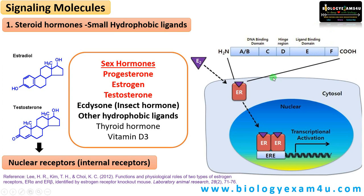The receptor has a DNA binding domain and a ligand binding domain. These steroid hormones can directly activate gene expression as these molecules have receptors inside the cell either in the cytosol or inside the nucleus.